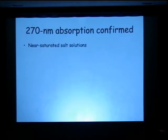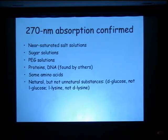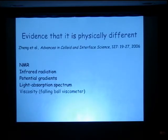It appears from these measurements that this exclusion zone has a 270 nanometer absorption that bulk water doesn't have, suggesting some difference. If this 270 nanometer absorption is some sort of reflection of the character of water organization, then you might expect that other situations where you have water structure might also show it. We checked near-saturated salt solutions, various salts, and we could see the same absorption. We tried various sugar solutions and PEG solutions. Other people have found proteins and DNA absorbed. Some amino acids we found absorbed. Interesting after the next talk, natural but not unnatural substances, for example D-glucose but not L-glucose, L-lysine but not D-lysine, also absorbed at 270 nanometers, suggesting that chirality may also be associated with some kind of water ordering. It's possible that the 270 nanometer absorption may be a signature of structured water.